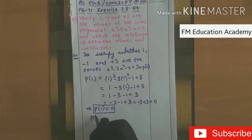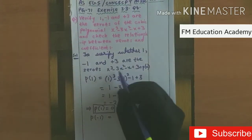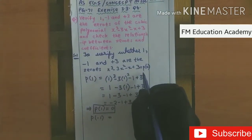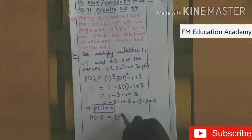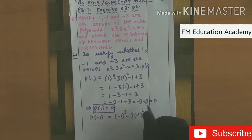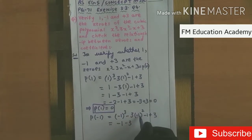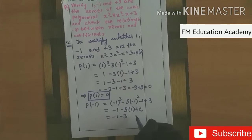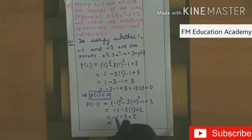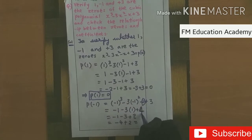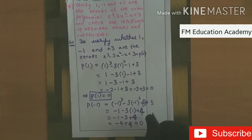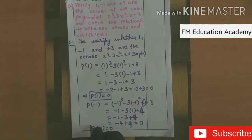Now let us find out what is p(minus 1). Substituting minus 1 in place of x: (minus 1)³ minus 3 times (minus 1)² minus 1 plus 3. Minus 1 cubed is minus 1, because minus times minus is plus, and plus times minus is minus. Minus 3 times (minus 1 times minus 1) is minus 3 times 1, giving minus 3. Then minus 1 plus 3 is plus 2. So we get minus 1 minus 3 plus 2, which gives minus 4 plus 4, equals 0. So p(minus 1) is also equal to 0.